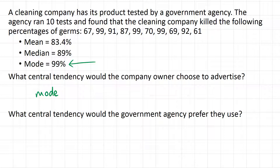But what central tendency would the government prefer they use? The government would probably prefer that those tests where they only killed 61 or 67% of germs get included in the measure. So the government would probably choose the mean as a better percentage to advertise to the public, so that people don't think the company kills 99% of germs all the time — there are lots of times where they miss and get less than 80%.